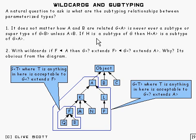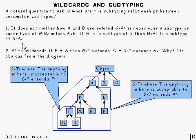And if H is a subtype of G, then H of A is a subtype of G of A. That's a perfectly normal type of relationship there, where you've got A and A the same.